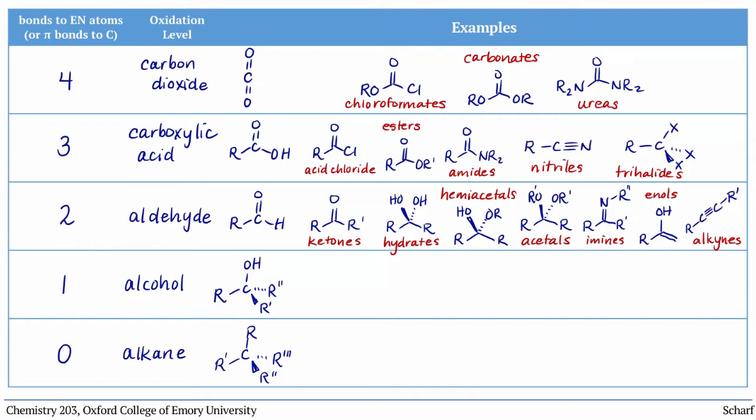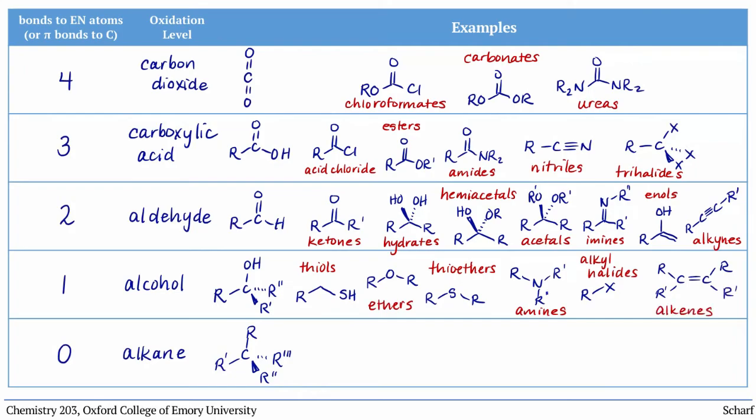The alcohol oxidation level includes alcohols and thiols, ethers and thioethers, amines, and alkyl halides. We generally also include alkenes in this list, because they have carbon atoms with one pi bond to another carbon.